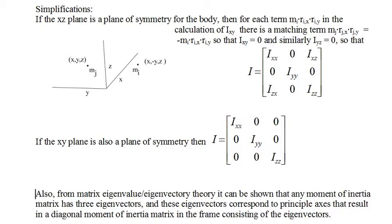If there are planes of symmetry in the rigid body, then a body frame can be chosen so that some of the products of inertia are zero. Given body frame axes x, y, and z as shown, if the xz plane is a plane of symmetry, then the products of inertia involving y vanish. For example, each term in the calculation of i sub xy on the right-hand side of the xz plane has a matching term on the left-hand side that cancels it, so i sub xy is zero. If there are two planes of symmetry, then the moment of inertia matrix is diagonal. Also, from matrix eigenvalue eigenvector theory, it can be shown that any moment of inertia matrix has three eigenvectors, and these eigenvectors are principal axes that result in a diagonal moment of inertia matrix.